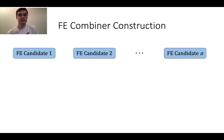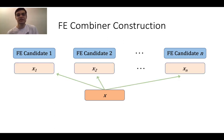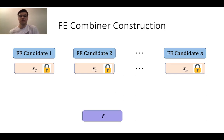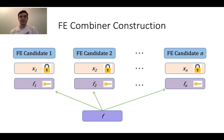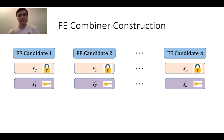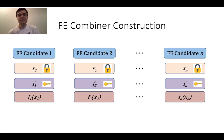Using function secret sharing, we can construct an FE combiner with the following template. To encrypt, we take an input and secret share it according to our FSS scheme, then encrypt each input share with the appropriate FE candidate. To generate function keys, we function secret share the function and generate function keys for each function share with the appropriate FE candidate. The ciphertext is the concatenation of the underlying ciphertexts, and the function key is the concatenation of the underlying function keys. An evaluator computes the partial function evaluations and uses the FSS recombination procedure to recover f(x). This is how correctness holds.